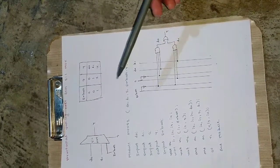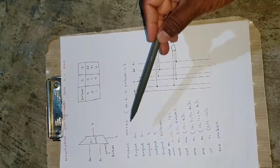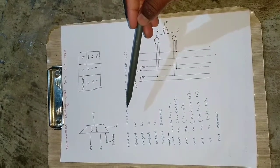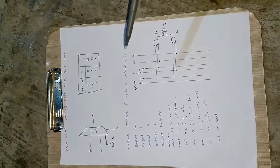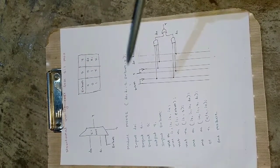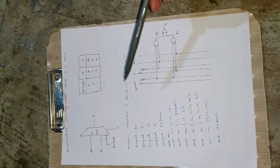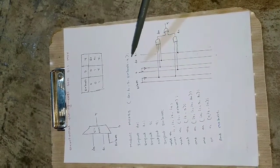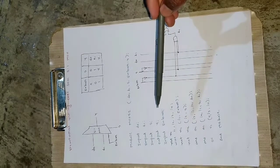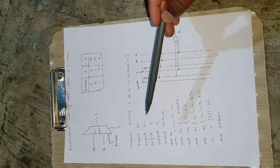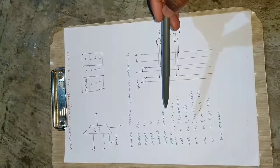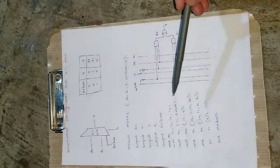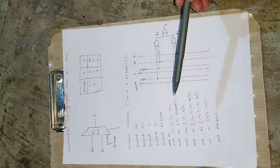Now for the structural Verilog code: we write the standard module keyword and give a user-defined name — I have written mux_structural_2, where 's' stands for structural and '2' for 2-to-1 mux. I then declare the input/output ports: d0, d1, s, enable bar, and y. The four inputs are d0, d1, s, and enable bar; y is the output. Note that every line must end with a semicolon in Verilog.